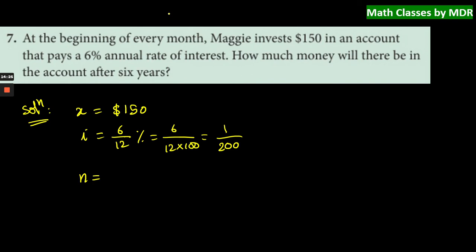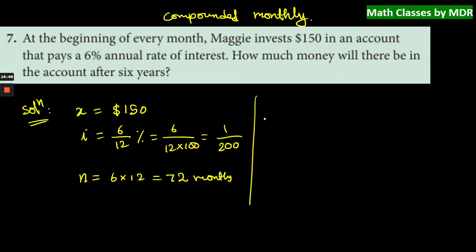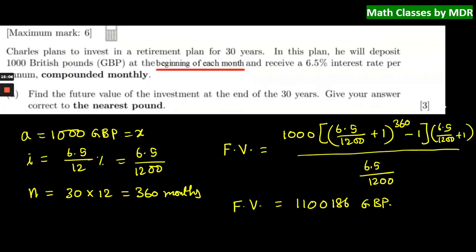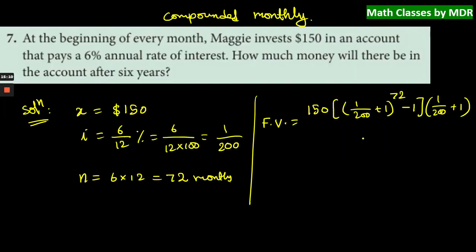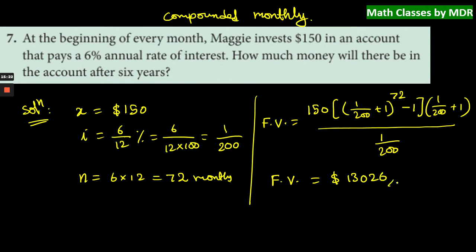The number of months is 6 × 12 = 72 months. The future value is X into [(1 + 1/200)^72 - 1] divided by (1/200), multiplied by (1 + 1/200). This gives a future value of approximately $13,026.